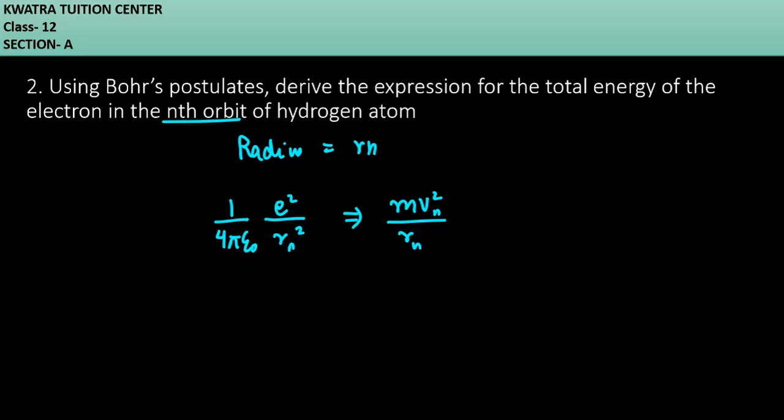So now what I can do is I can cancel whatever values I can. I can cancel Rn with Rn. So what I am left with is 1 by 4 pi epsilon not e square over Rn is equal to mvn square. So this is my first equation.